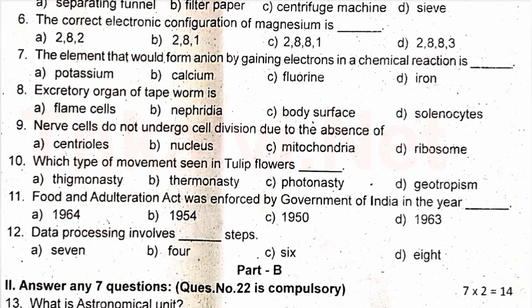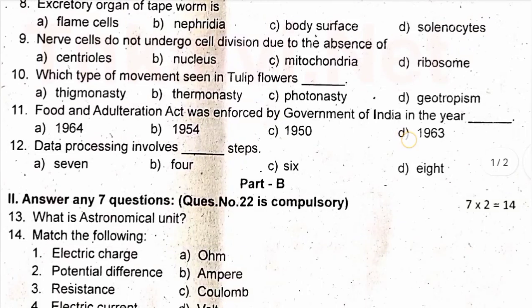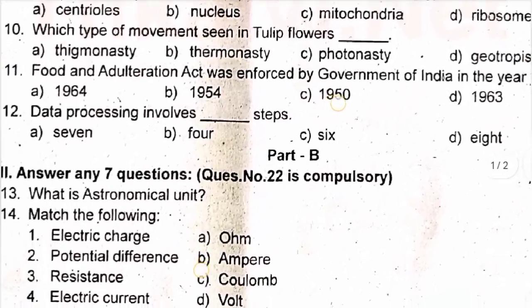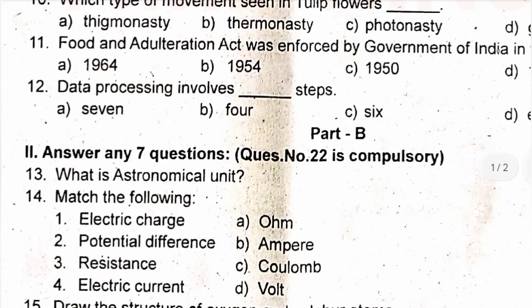Moving to Roman numeral II, Part B — answer any seven questions. Question number 22 is compulsory. Question 13: What is an astronomical unit?